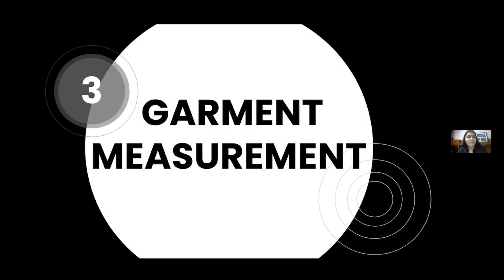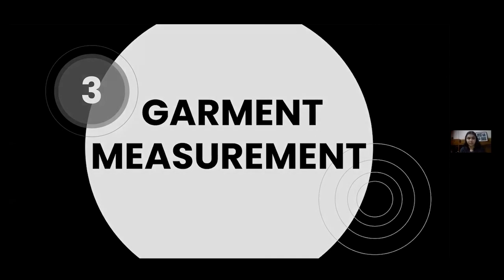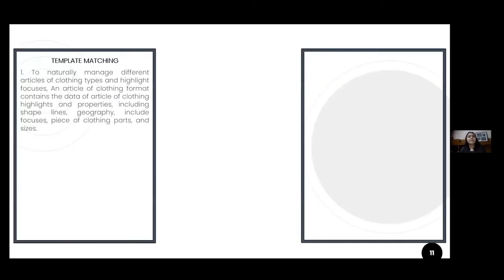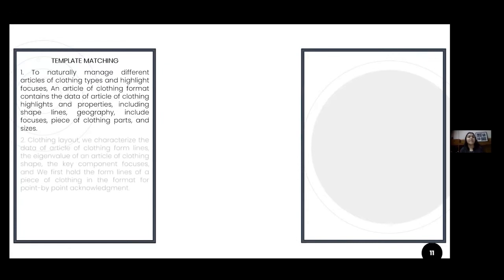Once the outer contour lines of the garment are obtained, it is necessary to identify the type of garment, which is done in two steps. Number 1, garment template matching. Number 2, the garment type recognition and dimension extraction.